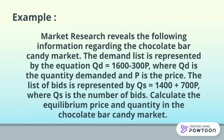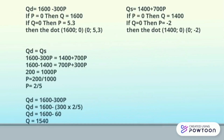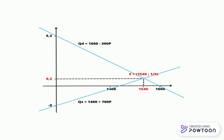Example: market research reveals the following information regarding the chocolate bar candy market. The demand equation is QD = 1,600 − 300P, where QD is the quantity demanded and P is the price. The supply equation is QS = 1,400 + 700P, where QS is the quantity supplied. Calculate the equilibrium price and quantity in the chocolate bar candy market. You can calculate according to the formula and get the result, finding the equilibrium point as shown in the diagram.